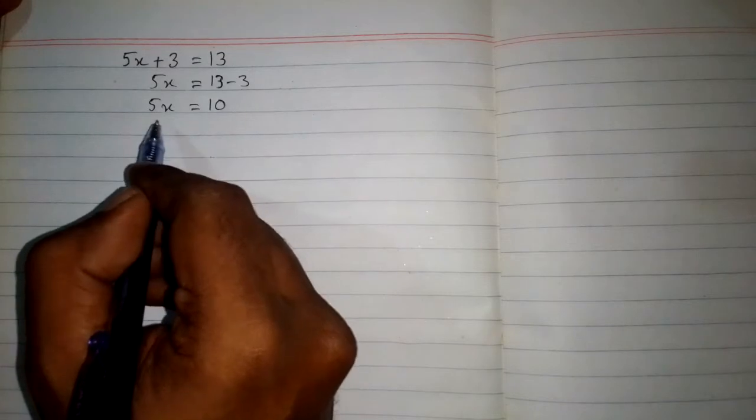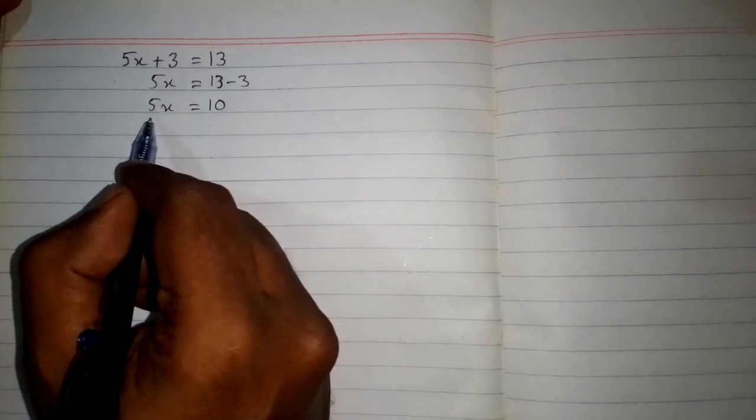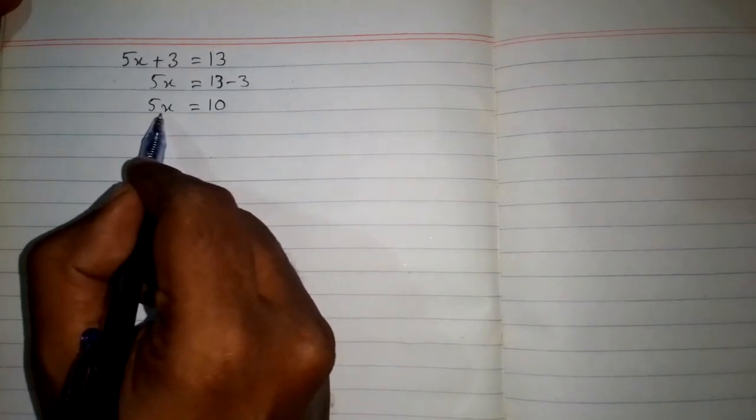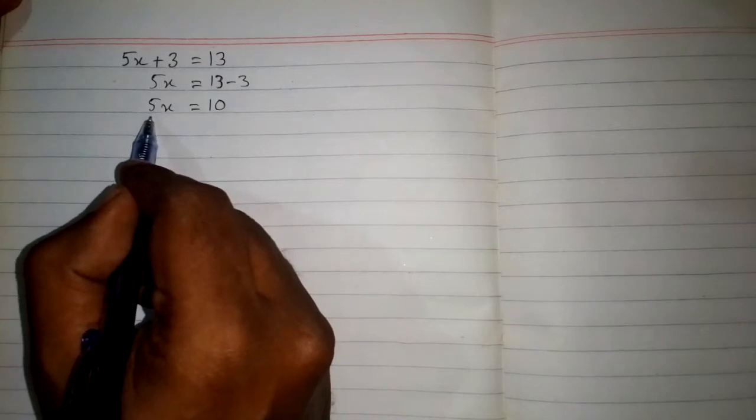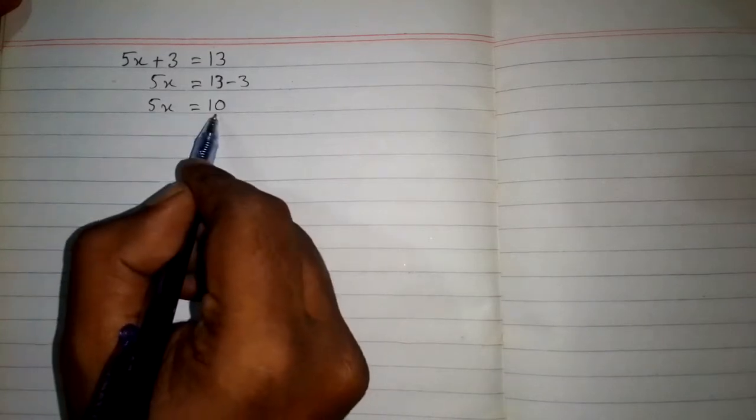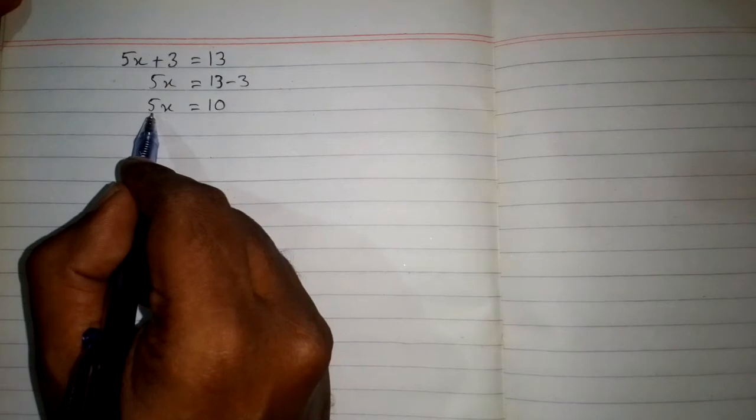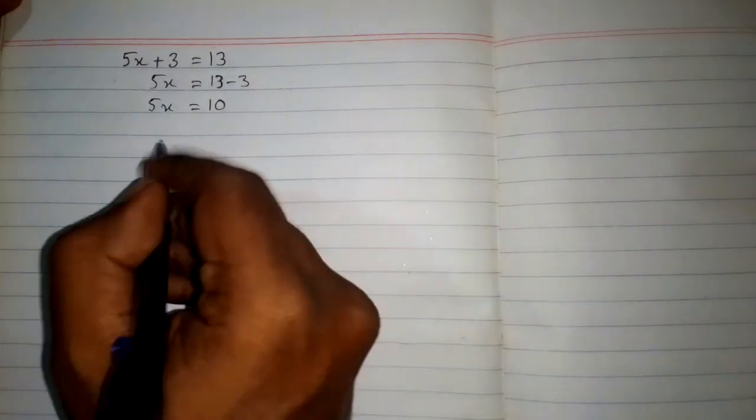Here we can see that 5 is multiplying by x. So when we take 5 on the other side of the equation, 5 is dividing on the other side of the equation.